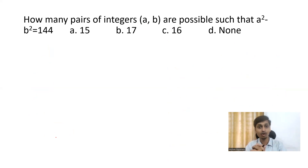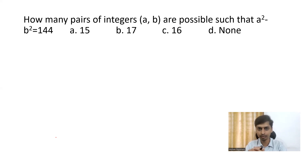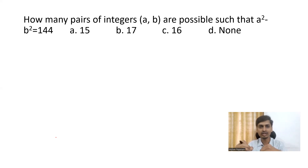Here you have the question: how many pairs of integers A, B are possible such that A squared minus B squared equals 144? Naturally, in all competitive exams, if you look at this kind of question, we feel it a little difficult and we try to skip it.